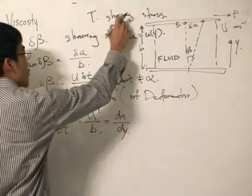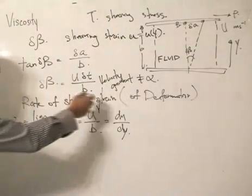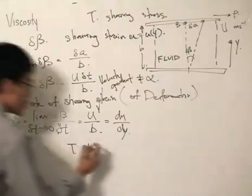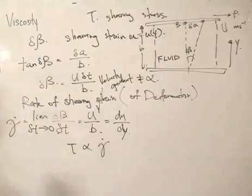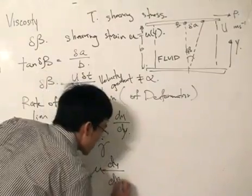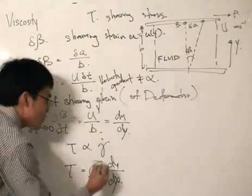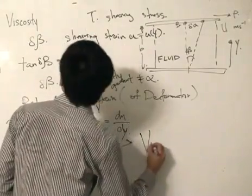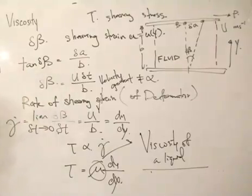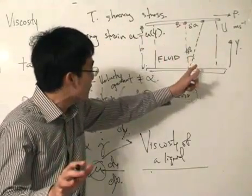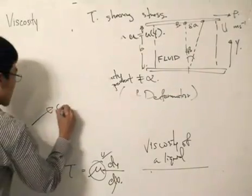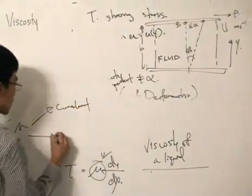Now, almost done because the shearing stress can now be related to the rate of shearing strain or the rate of deformation. And by experimental results, it does in fact increase proportionally to the rate of deformation. And now we will introduce a constant like this and change it to the du dy. And this, my friends, this mu over here is called the viscosity of a liquid. And that is how we define it. Some really conceptual stuff, but it all does make sense if you follow the argument throughout.